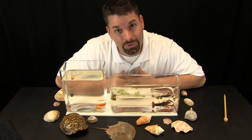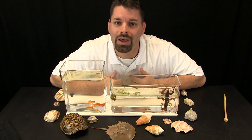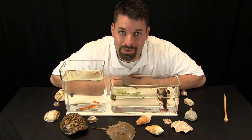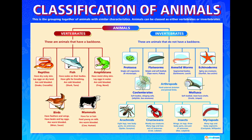So why would we even care if some animals have a backbone and others do not? Well, the fact that some animals have backbones and others do not helps scientists to group them into categories and groups. At the top, animals are grouped into vertebrates — animals with backbones — and invertebrates — animals without backbones. Vertebrates include reptiles, fish, amphibians, mammals, and birds. Invertebrates include things like worms, spiders, insects, clams, and crustaceans.